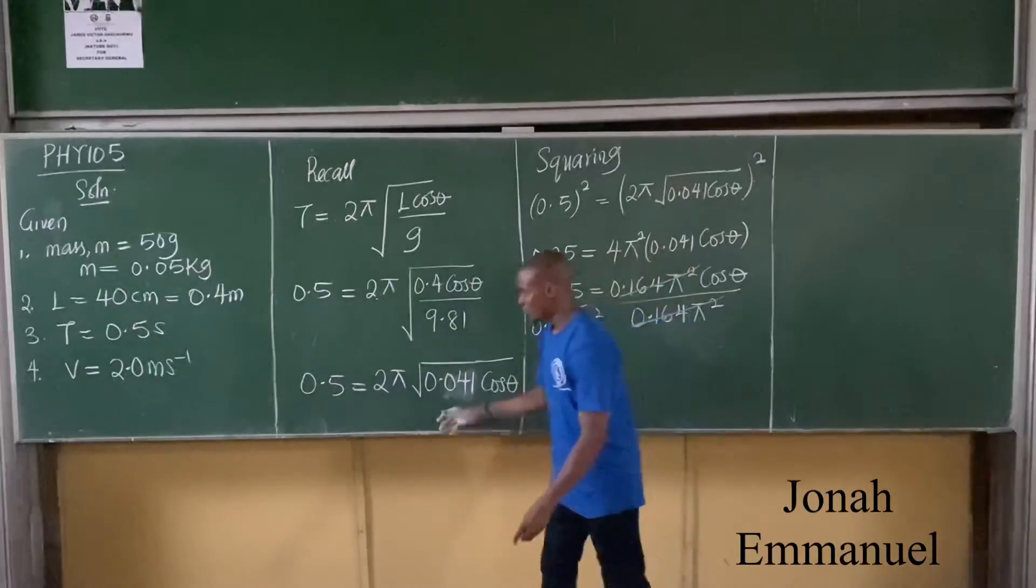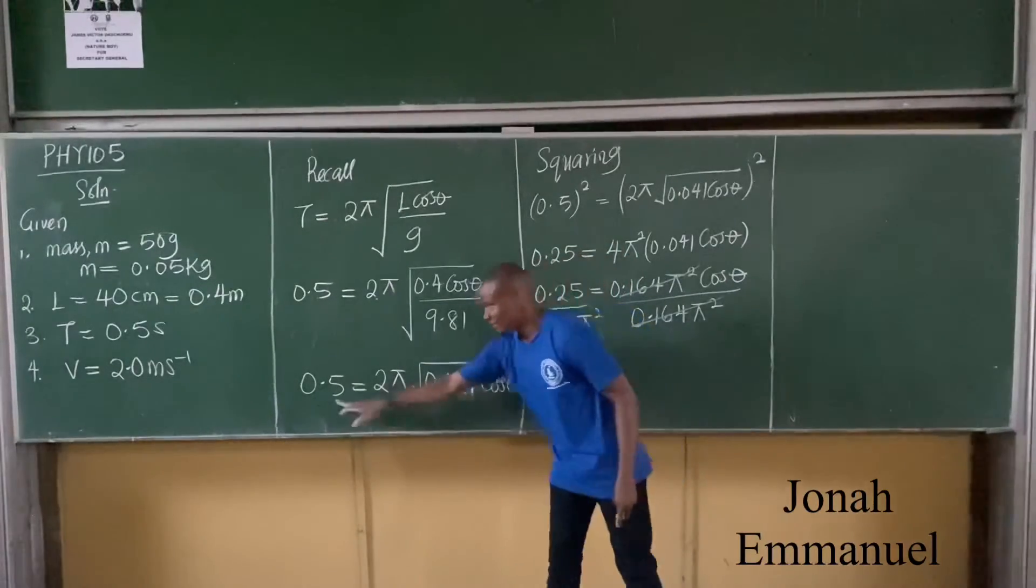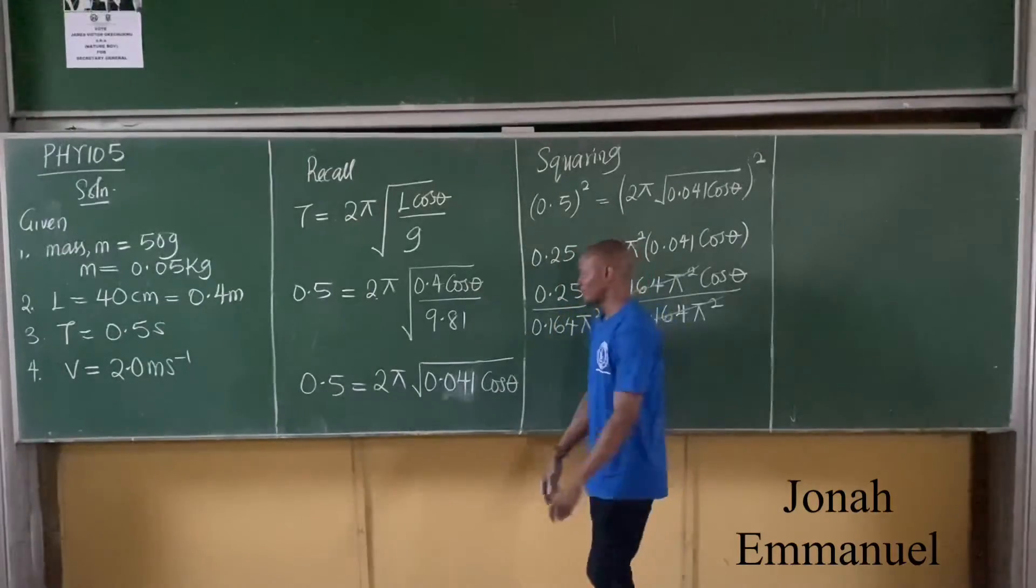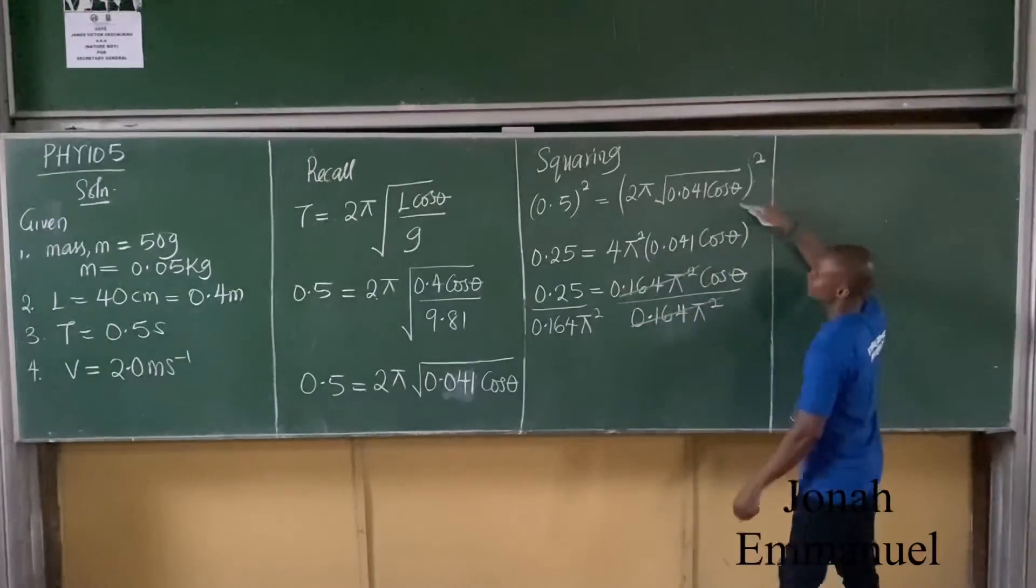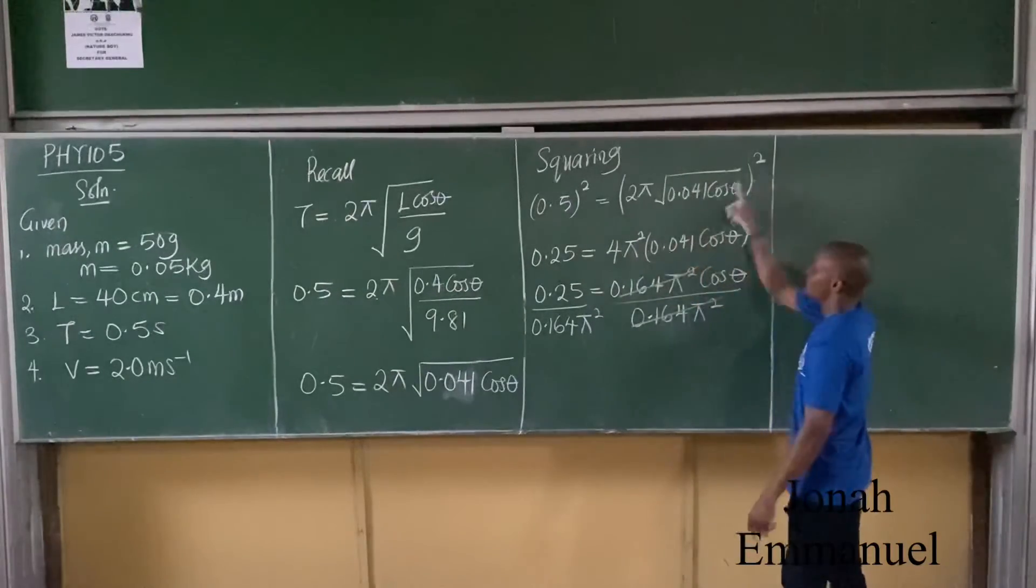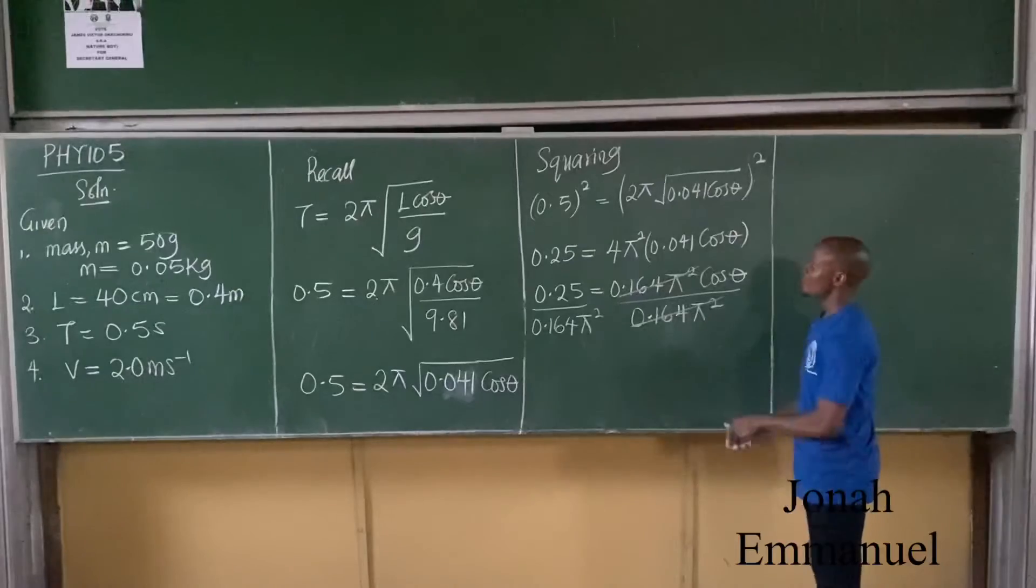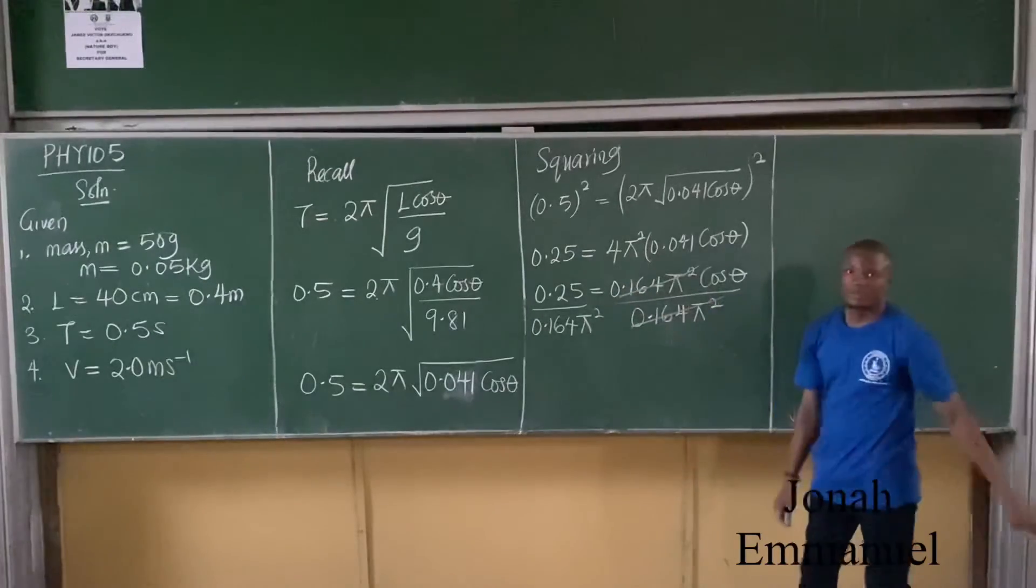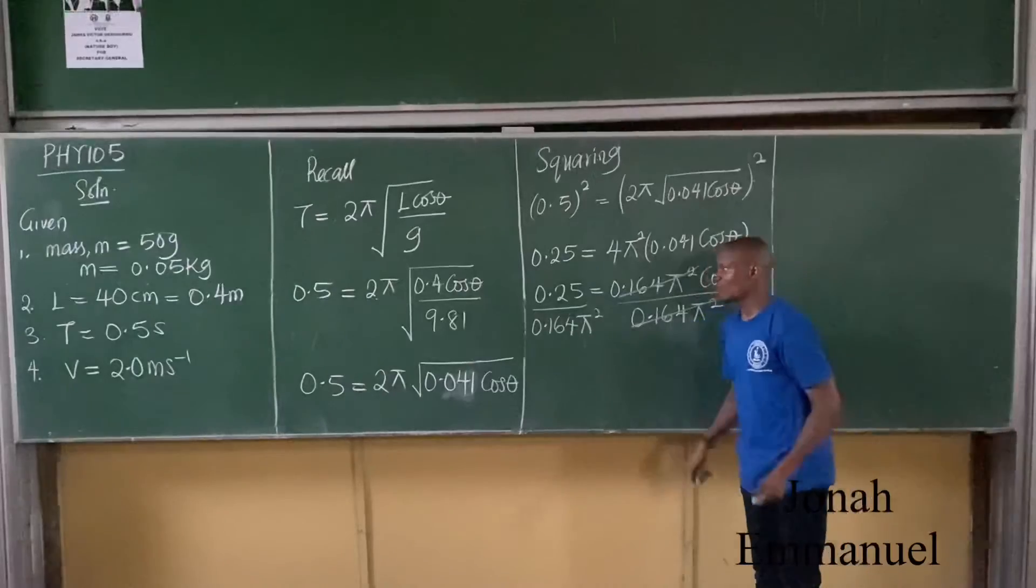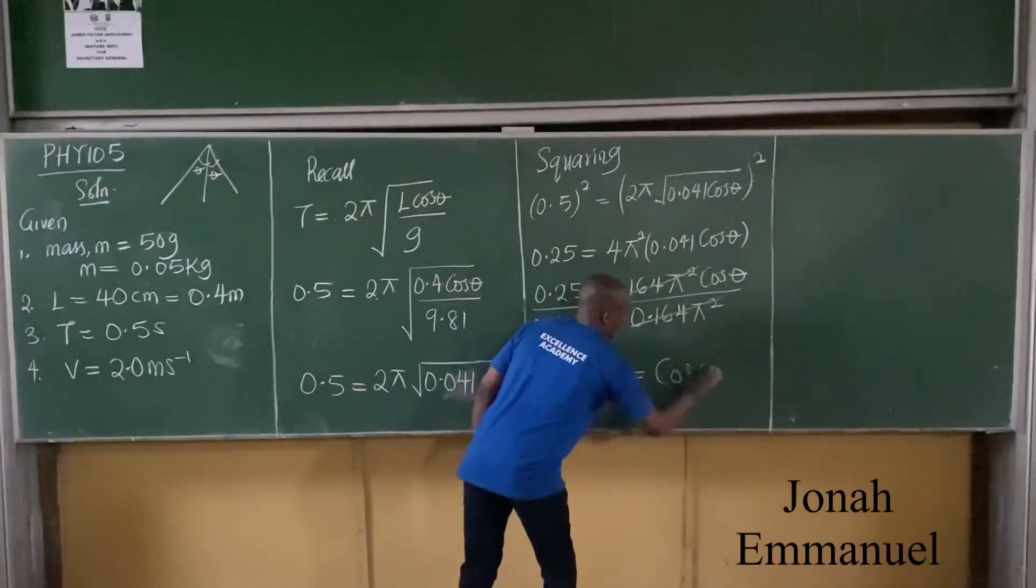Add this, square both sides. You can say divide by 2π. Whichever will have the same answer. So here now 0.5 square, 0.25, is equal to this square. 2 square is 4, π square. From here now take the numbers, 4 times π square.